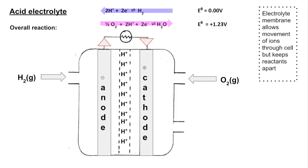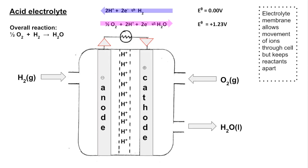For the overall reaction, combining the two half equations gives half an O₂ reacting with H₂, creating water. The electrons and H⁺ ions cancel, and water is the only product of this fuel cell. We can work out the voltage of the cell: most positive minus least positive, giving 1.23 volts.